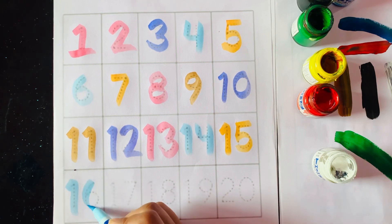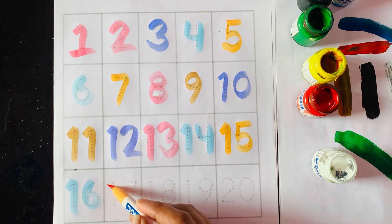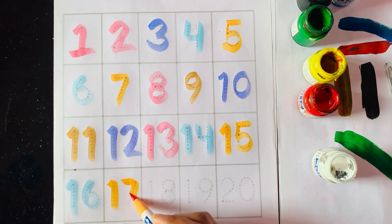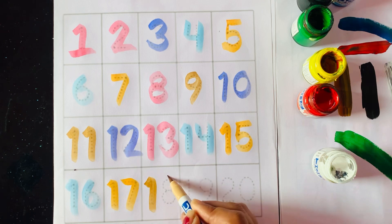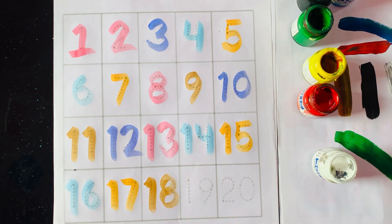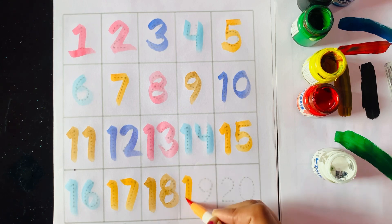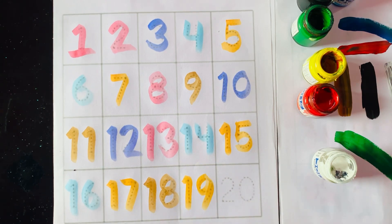One six, sixteen. One seven, seventeen. One eight, eighteen. One nine, nineteen. Two zero, twenty.